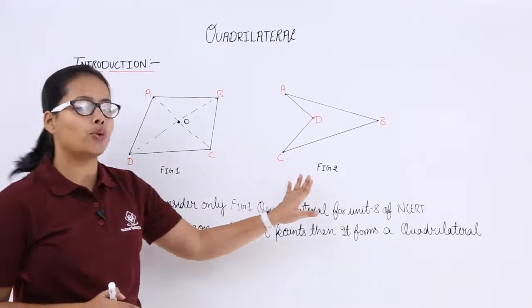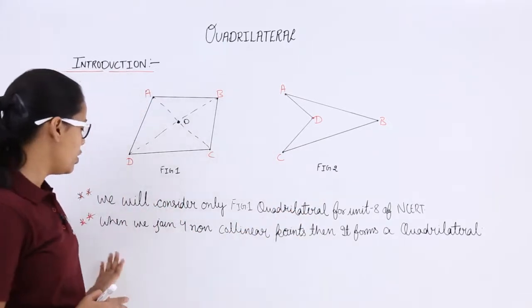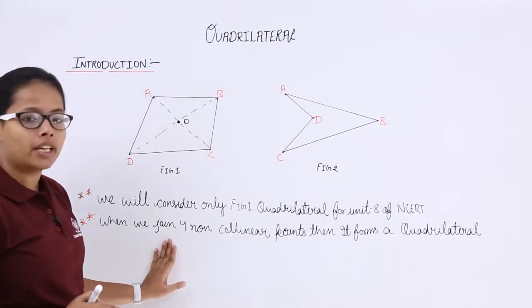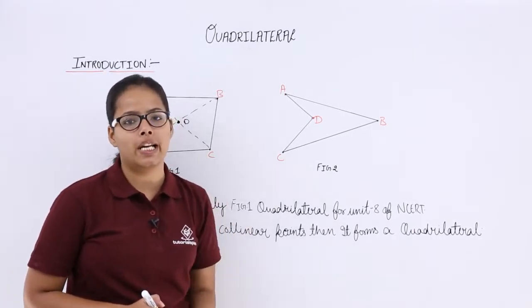You can see here I have drawn two quadrilaterals and how will we form a quadrilateral? See a note here, when we join any four non-collinear points then it forms a quadrilateral.